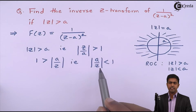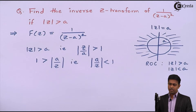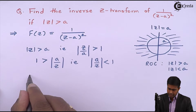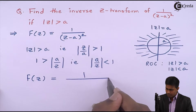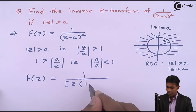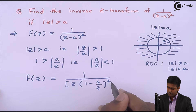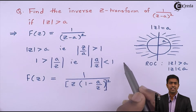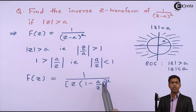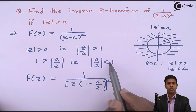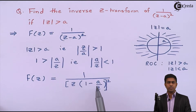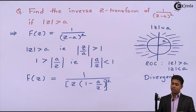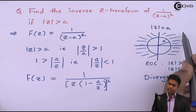So if A by Z is less than 1, then the Z transform exists. Now, in the given function we will take Z outside. Here we will get F of Z as 1 upon Z, and in the bracket we get (1 minus A by Z) the whole square. If mod A by Z or A by Z is less than 1, the value inside is less than 1. As soon as this value becomes 1, we get 1 minus 1 equals 0, making the answer infinity — the series is divergent. Since we want a convergent series, the region of convergence is given, and mod A by Z must be less than 1.